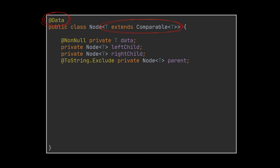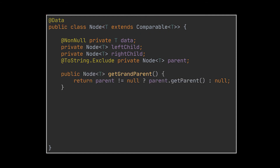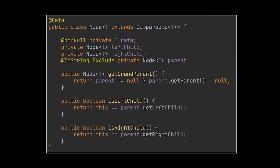A few extra methods were added that will be very helpful when implementing the splay logic. The first one returns the grandparent of the node invoking it, and the other two return true or false based on whether the node calling them is a left or right child node.